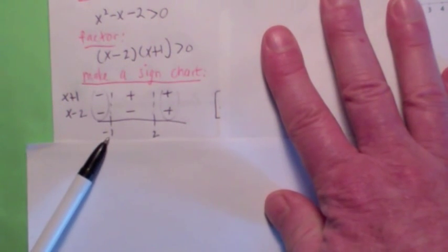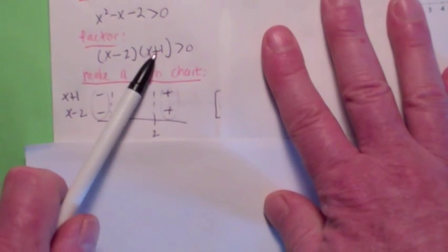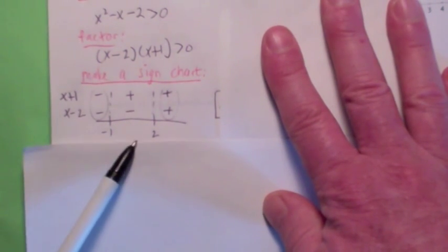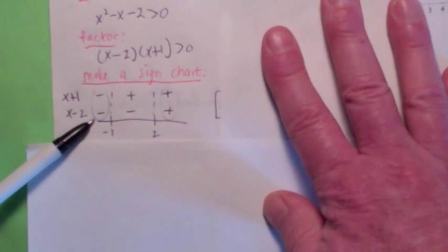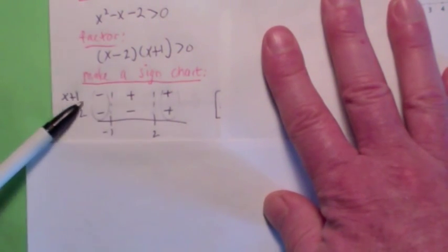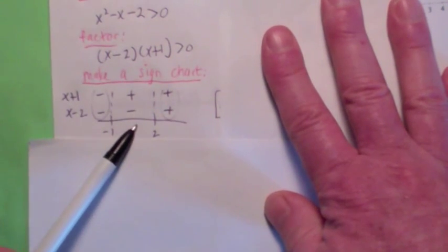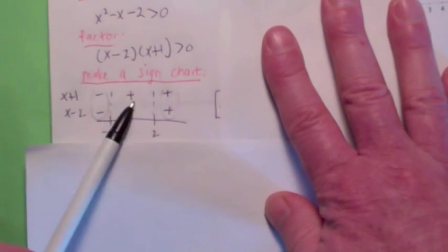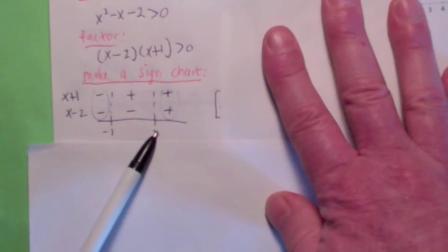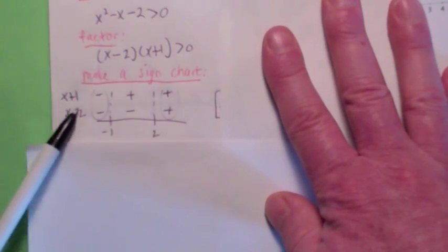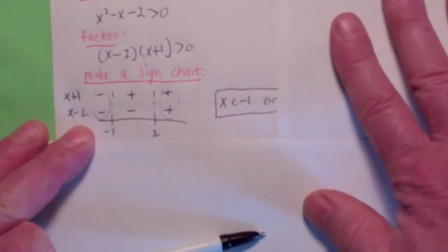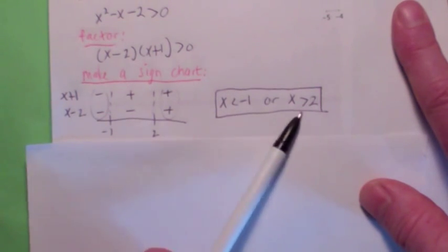Plot where each factor is zero on the x-axis: negative 1 makes x plus 1 zero, and 2 makes x minus 2 zero. Then investigate the sign in each region. Pick negative 2 to the left of negative 1: plug in, you get negative 4 and negative 1 — both negative. Pick zero between them: x minus 2 gives negative 2, x plus 1 gives positive 1. Pick 100 to the right of 2: both positive. When is the product greater than zero? Both same sign — so x less than negative 1 or x greater than 2.